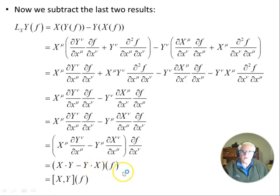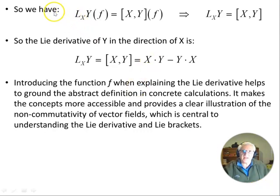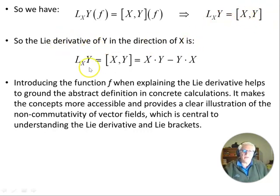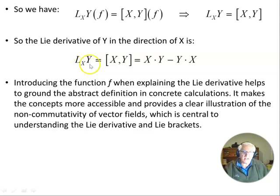What we're left with is the scalar or inner product of X with Y minus the inner product of Y with X, times f out front. So the Lie derivative of the directional derivative of f in the direction of Y with respect to X gives us the commutator [X, Y](f). This implies that the Lie derivative of the vector field Y with respect to the vector field X is simply the commutator [X, Y] = X^μ ∂Y^ν/∂x^μ − Y^μ ∂X^ν/∂x^μ.